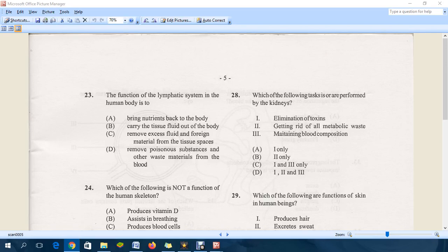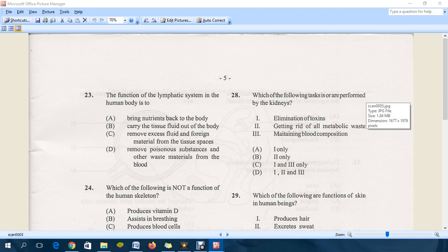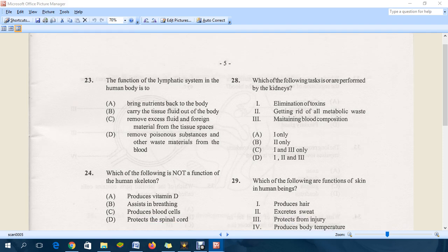Hello everyone, welcome to our next episode. This is the continuation of the 2009 specimen paper. We'll continue with question 23: the function of the lymphatic system in the human body is two. The answer for this one is C - remove excess fluid and foreign material from the tissue spaces.